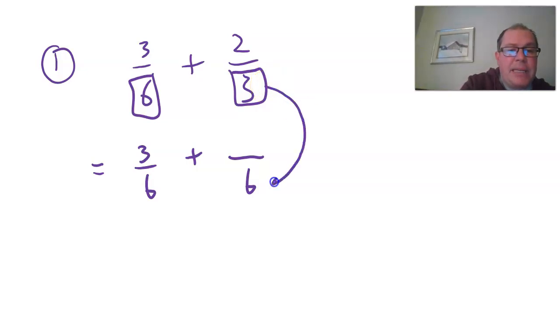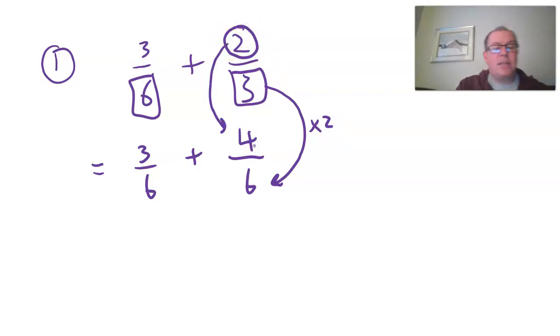So what do you multiply three by to get the six? The answer is two. So you have to multiply the top number by two as well to keep it equivalent. So four sixths. So I've multiplied, let's just show that working, remind you from fractions one video.